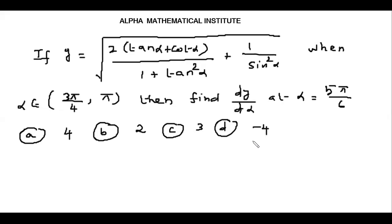Hi friends, welcome to Alpha Mathematical Institute. In this video, we'll discuss a problem on trigonometry. The problem: if y equals square root of 2 times (tan α + cot α) divided by (1 + tan²α) plus 1 divided by sin²α, when α belongs to the open interval (3π/4, π), then find dy/dx at α = 5π/6. Four options are given: 4, 2, 3, or −4.